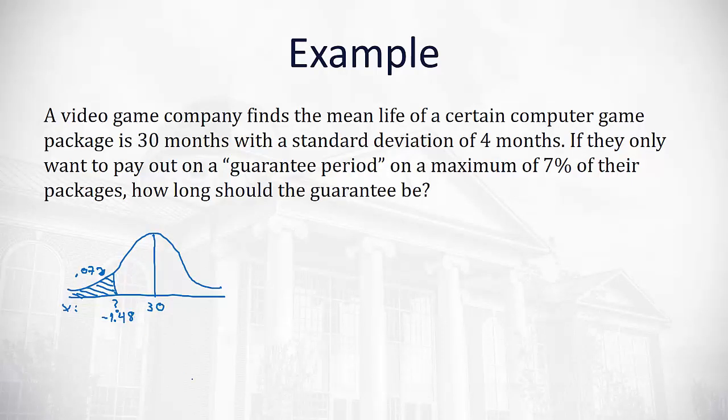So we have our z value of negative 1.48. We still need to figure out what x value goes with the negative 1.48, and that's where we use our x equals z times the standard deviation plus the mean formula. z we just found out was negative 1.48.